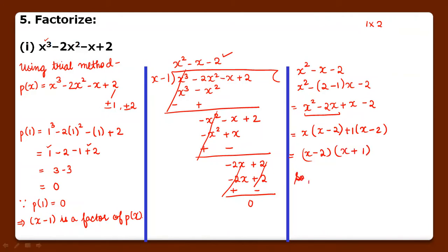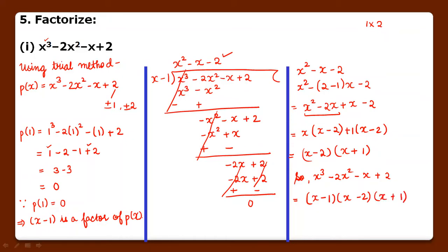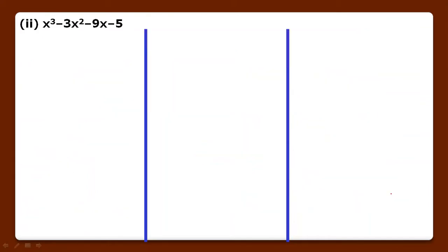So x cube minus 2x square minus x plus 2 equals the first factor into the second factor into the third factor, giving us: (x minus 1)(x minus 2)(x plus 1). This is the method used to factorize a cubic polynomial. Now the next polynomial: x cube minus 3x square minus 9x minus 5.